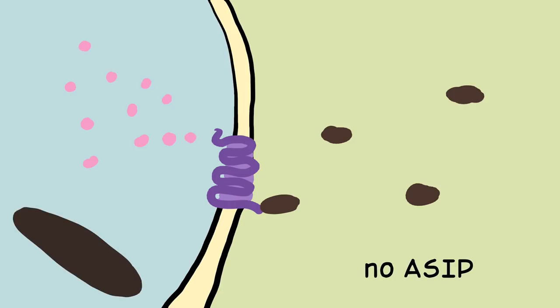Now we saw what happens when one of the signalers on the outside is missing. When there is no alpha-MSH, the animal will be red, and when there is no ASIP, the animal will be black.